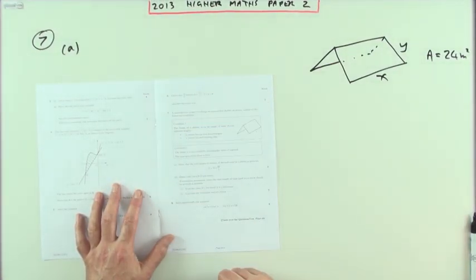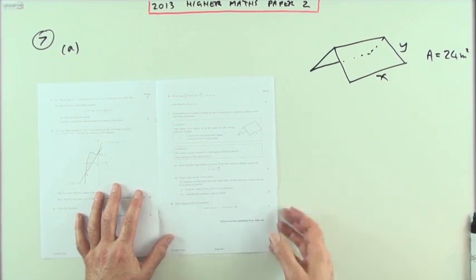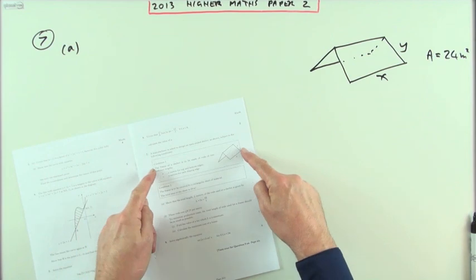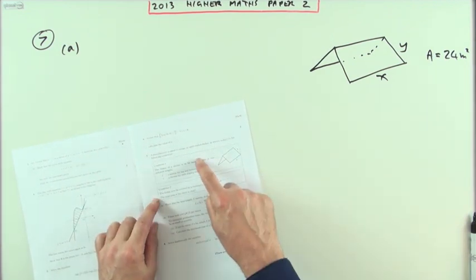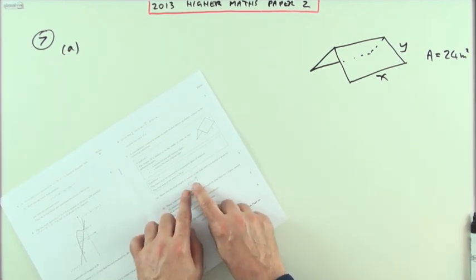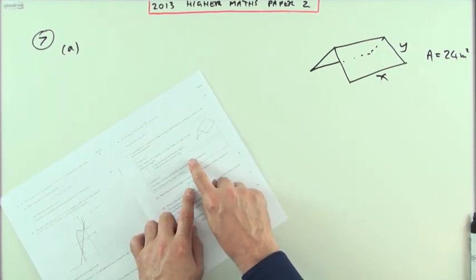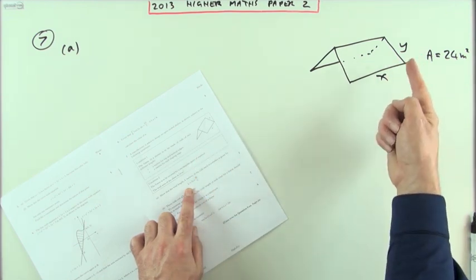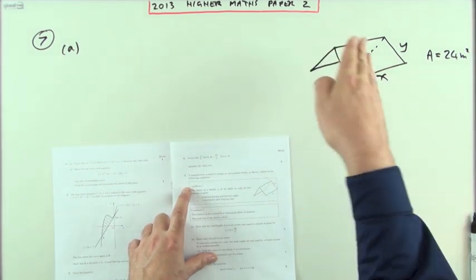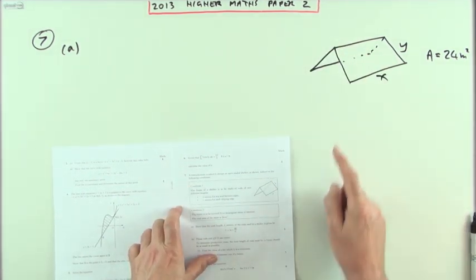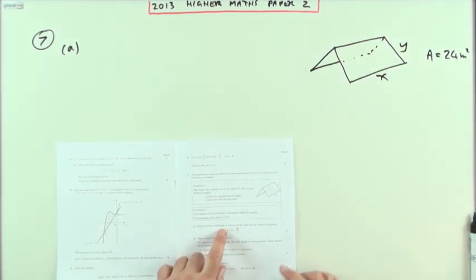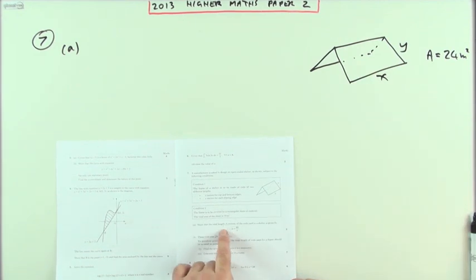Question 7 from the 2013 Higher Maths paper to the optimization question. In fact they've actually made it a bit easier this time for the optimization by pointing out in these little blocks the two conditions that are required to be met. You've got this shelter which is just a folded rectangle supported by these poles of length x and y. Show the total length of all these rods comes to this expression.